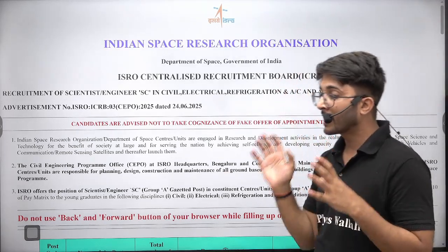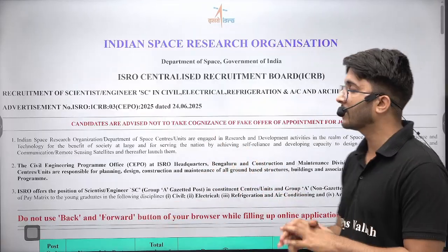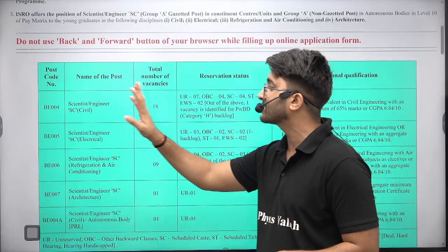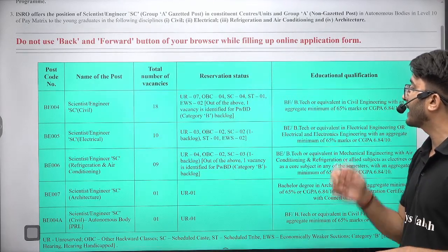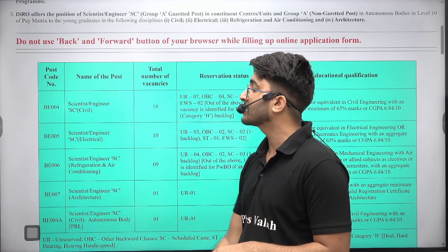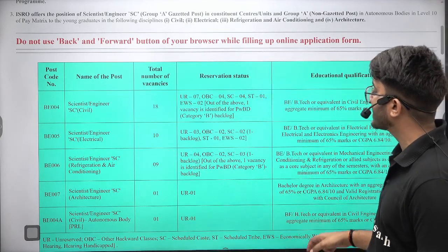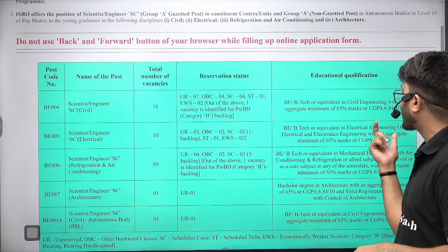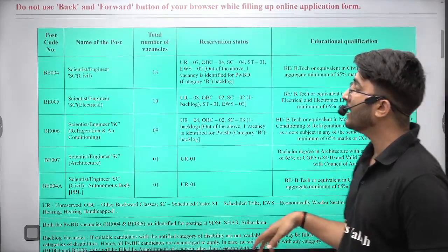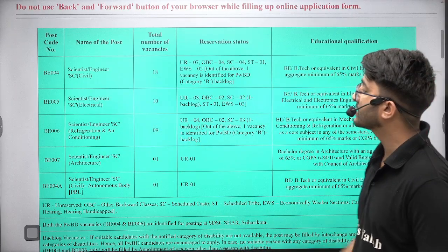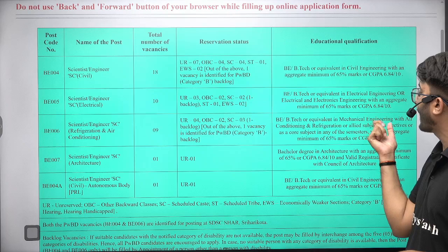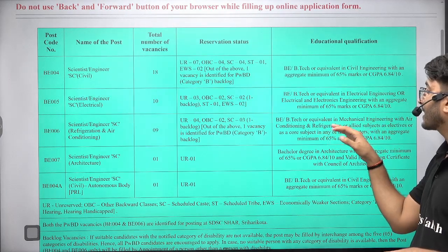In RAC, mechanical students are eligible if they have refrigeration and air conditioning as a subject in their graduation degree. So here we are going to discuss point by point. Scientist Engineer SC Civil: 18 vacancies are available; if you have a B.Tech degree with 65% marks or 6.84 CGPA, you are eligible to apply. Scientist Engineer SC Electrical: 10 vacancies are there; B.Tech or equivalent in electrical engineering or electrical and electronics engineering makes you eligible. Similarly, Scientist Engineer SC Refrigeration and Air Conditioning: 9 vacancies are there.